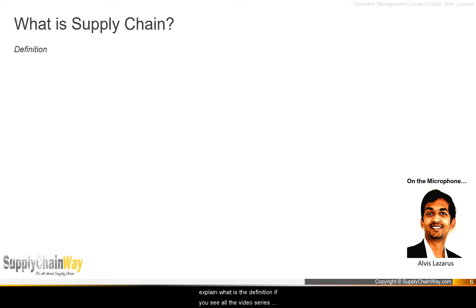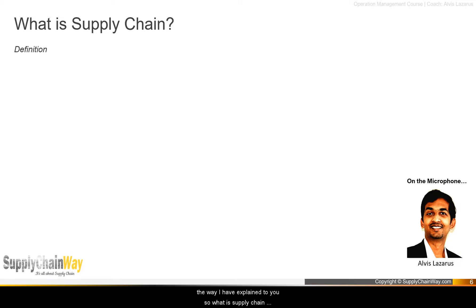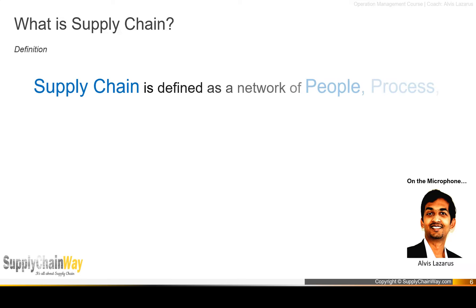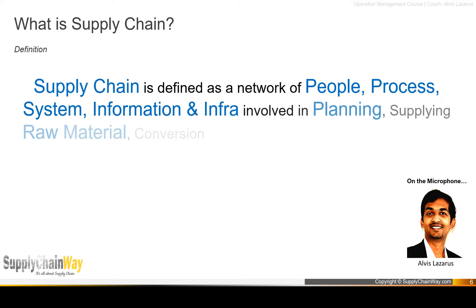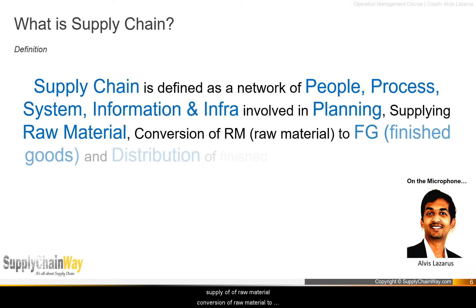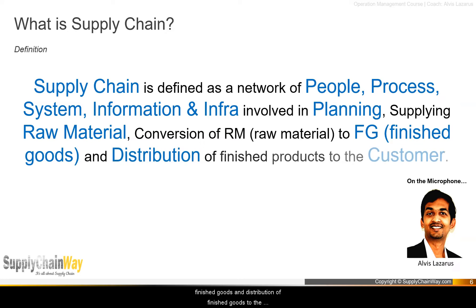Now for the definition — it comes last because it's more theoretical, and understanding the concept is more important. In my own words: supply chain is defined as a network of people, processes, systems, information, and infrastructure involved in planning the supply of raw materials, conversion of raw materials into finished goods, and distribution of finished goods to the customer.